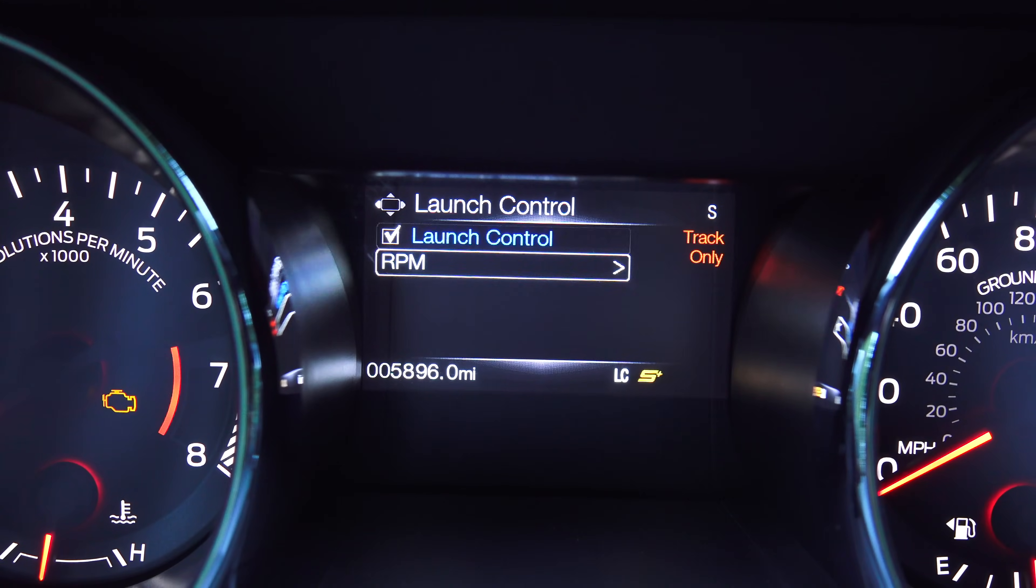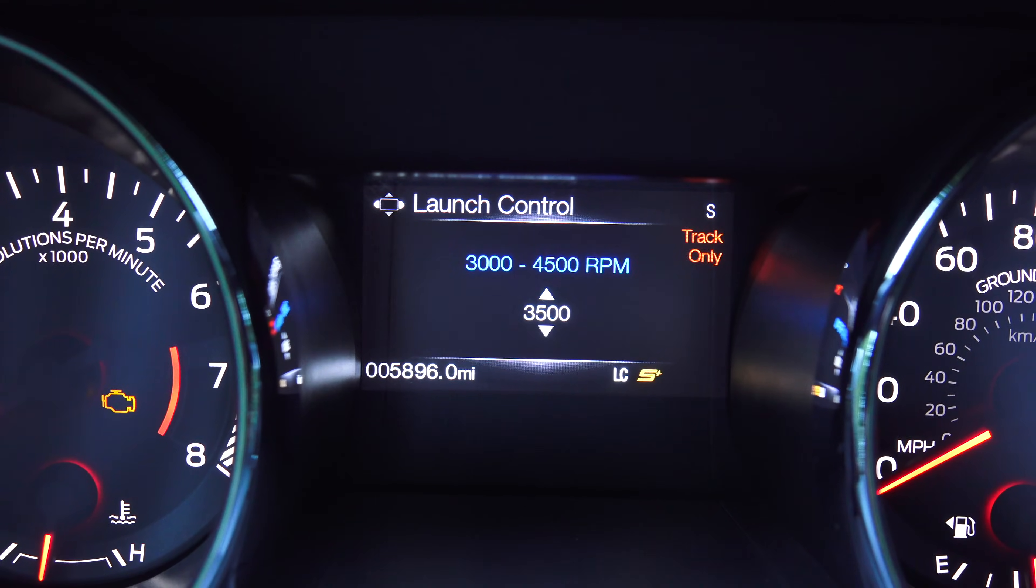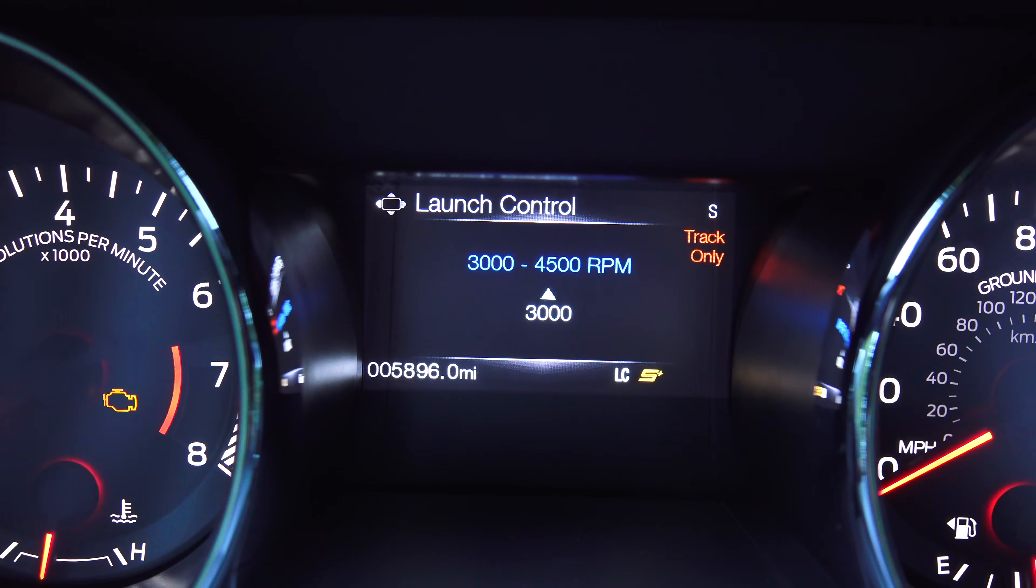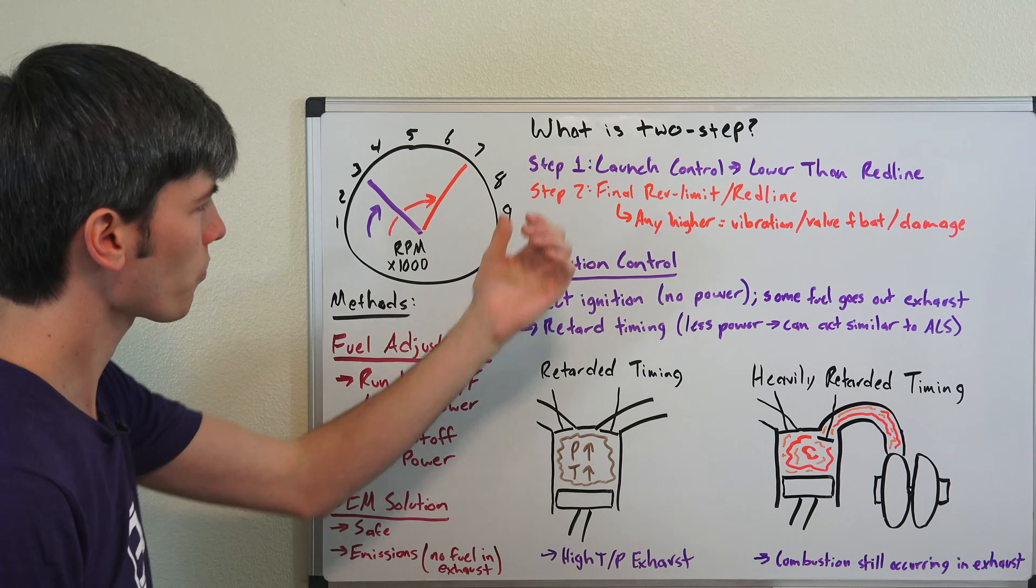Lots of modern cars come with launch control. These are all a form of a two-step rev limiter. Any modern car out there and it's becoming increasingly common, which is a cool feature to have. And so why do you need this at a lower rpm?